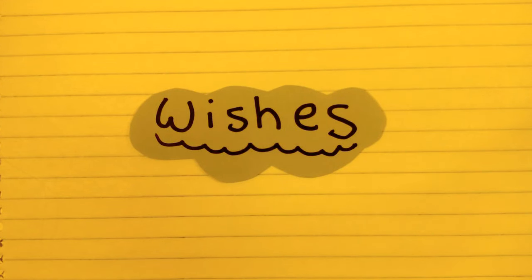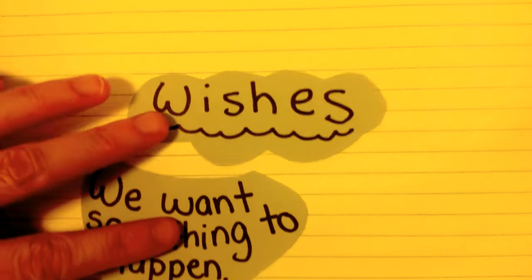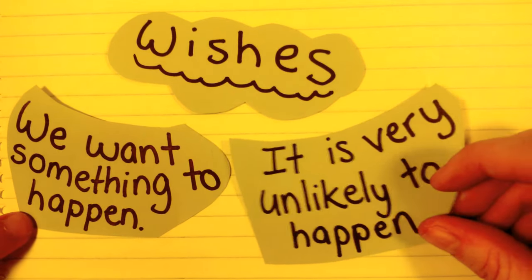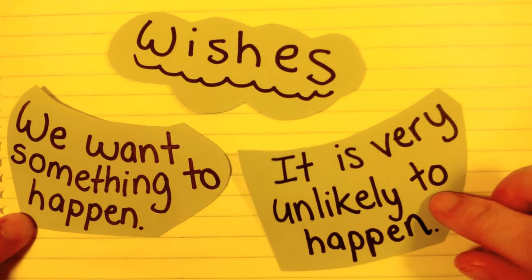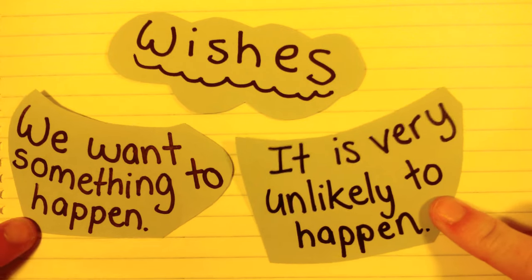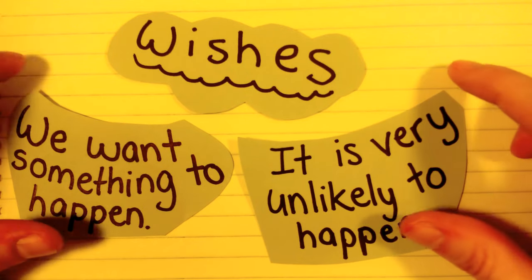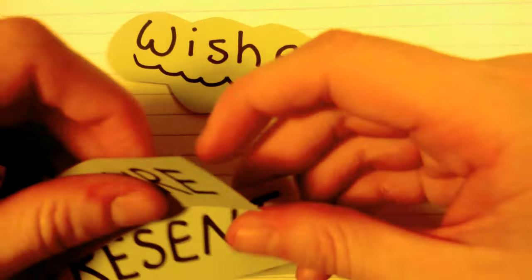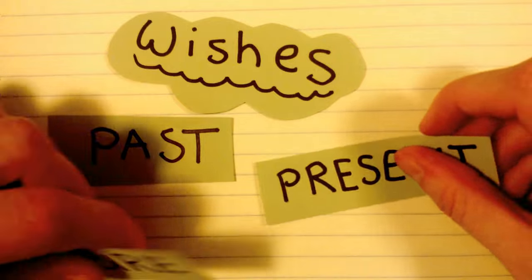Hi, I'm Emily and I'll be telling you how to express wishes in English. So firstly, a wish is something that we want to happen, but that is impossible or is very unlikely to happen. We can talk about wishes for the past, the present, or the future.